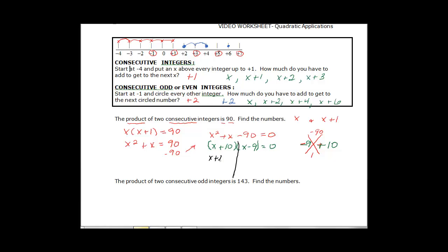So if X plus 10 is equal to 0, when we subtract 10 from both sides it's going to be negative 10. And if we come over here and say X minus 9 is equal to 0, and we add 9 to both sides, X is going to be equal to 9.